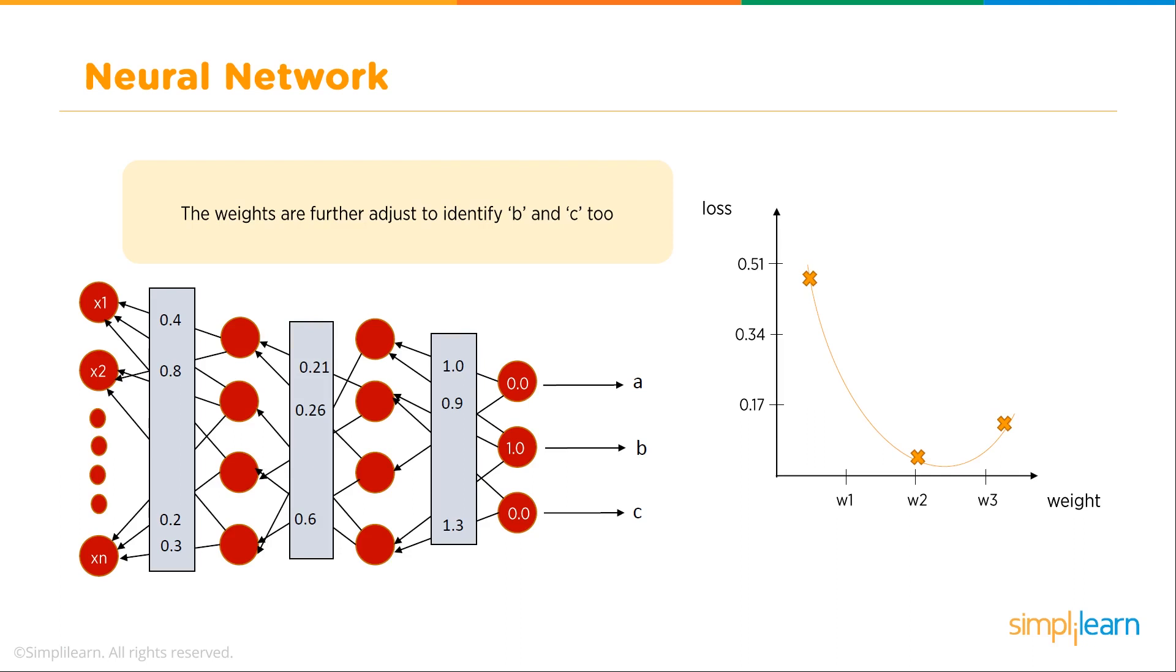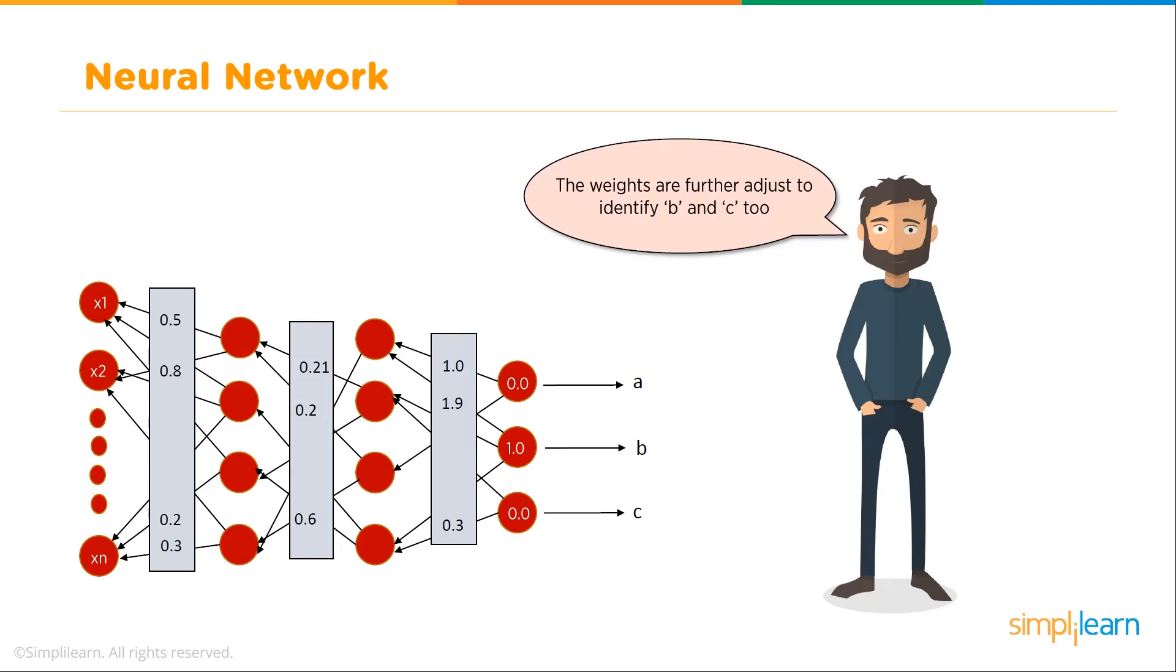The weights are further adjusted to identify B and C too. This is interesting because you actually do them at the same time. As the error goes back, you kind of find the overall error for all the inputs coming in. Then that's what gets propagated going back or the overall loss. You kind of have to step away from that word error because it's not just about the error, it's about the loss. A lot of times you actually do them all at the same time, adjusting those weights for A, B, and C.